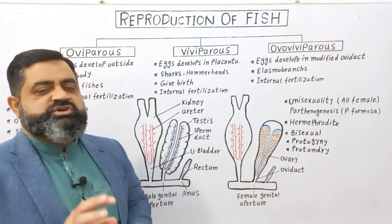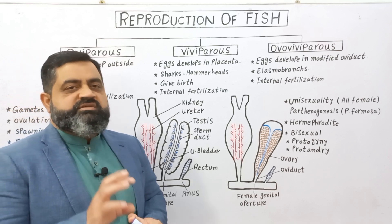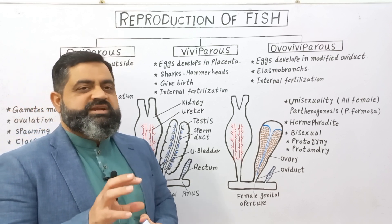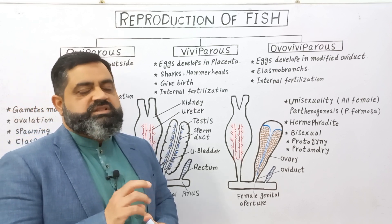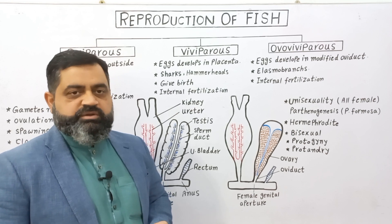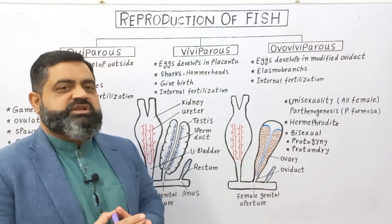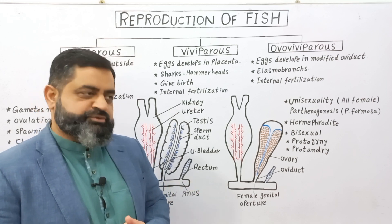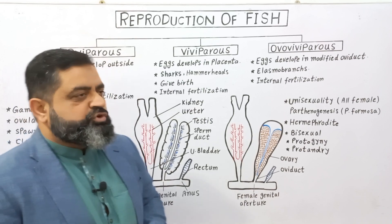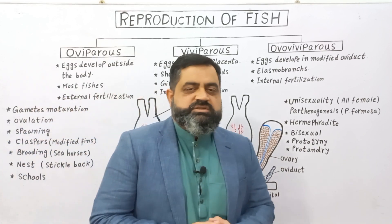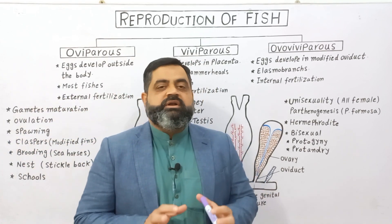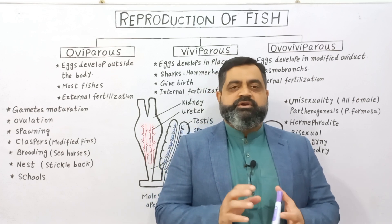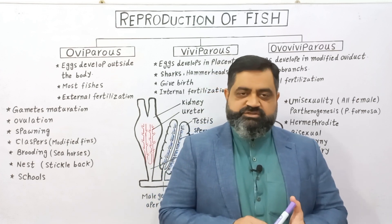Fishes which are viviparous or ovoviviparous usually retain eggs inside the female body where fertilization takes place and the rest of development proceeds. Now we are going to discuss some important terms related to the reproduction of fish.